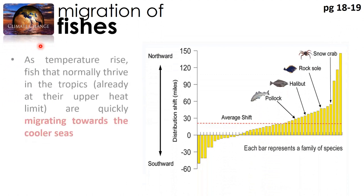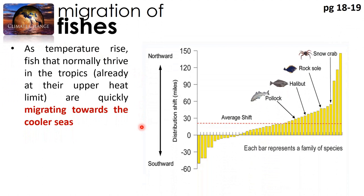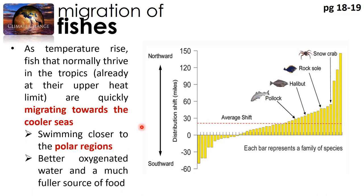As mentioned in the video, as temperatures rise, fish that normally thrive in the tropics — who are already at their upper heat limit — are quickly migrating towards the cooler seas. They're swimming closer to the polar regions because they're in search of better oxygenated water and a much fuller source of food. As mentioned in the previous part of the lecture, increasing water temperatures make it more difficult for oxygen to remain dissolved in the water, so warmer waters are usually less well-oxygenated. That's why fish prefer to find cooler waters with better oxygenation levels.